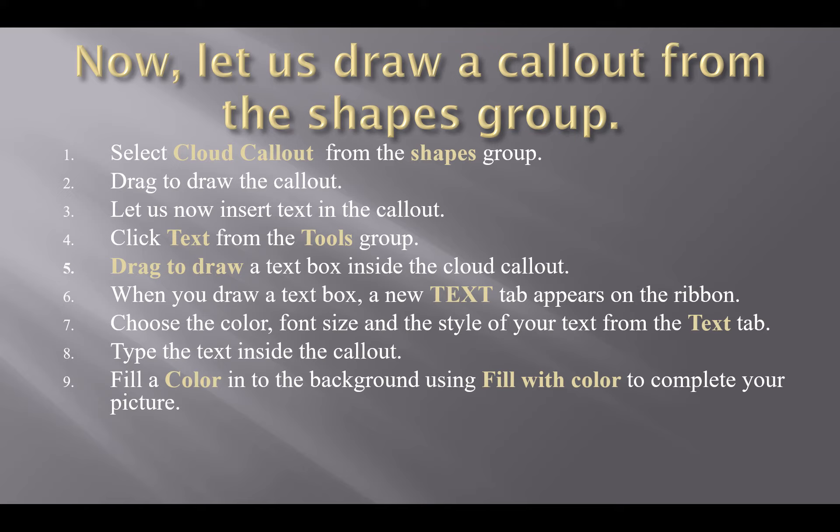Jab aap text box draw kar lete hain shape mein, aapke ribbon par text tab show hoga. Text tab mein se aap jo bhi color apne text ka rakhna chahte hain wo select kar sakte hain, font ka size select kar sakte hain, aur text ka style bhi text tab mein se select kar sakte hain. Choose the color, font size, and style of your text from the text tab, then type your text inside the callout.